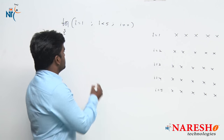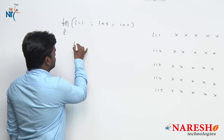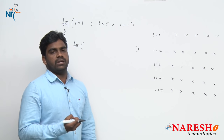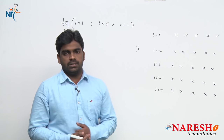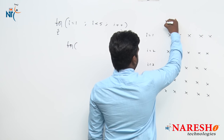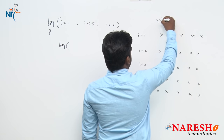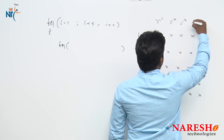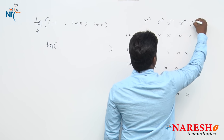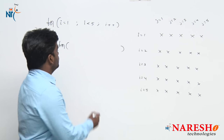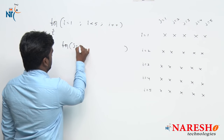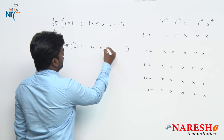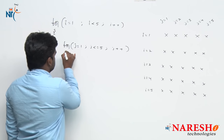The inner for loop represents how many columns — that is, how many stars we are printing in each row. Here, j value starts with 1, and runs j equals 1, 2, 3, 4, 5. So: j starts at 1, j is less than or equals to 5, j plus plus.